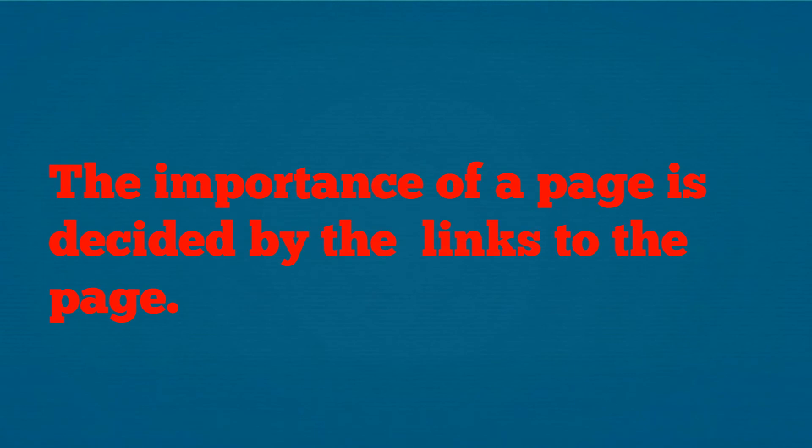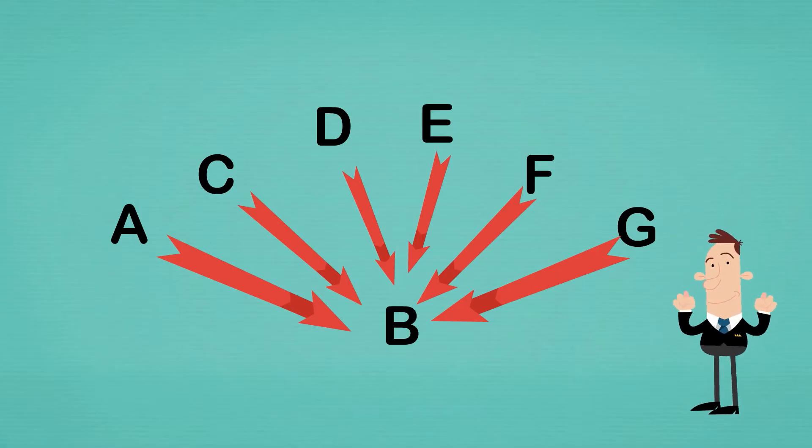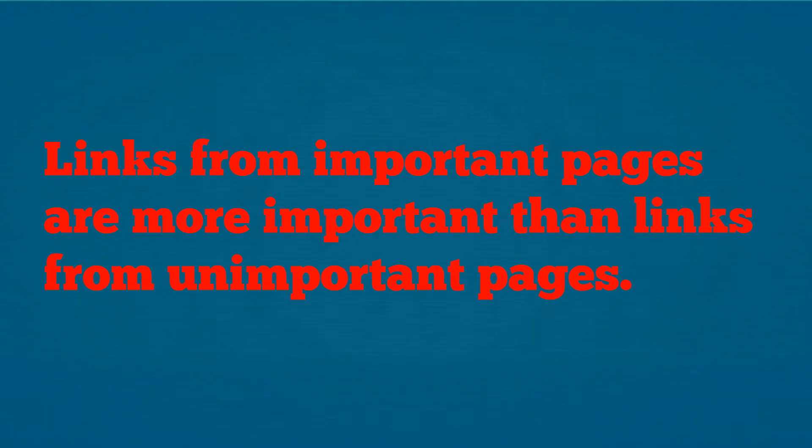The second principle is that the importance of a page would be decided by the links to that page. Now by links, I mean that if website A has a URL that you can click on that takes you to website B, then we say there is a link from A to B. The more pages that have links to your website, the more important is your website. And finally, links from important pages are more important than links from unimportant pages, and this seems reasonable. If CNN.com has a link to my website, that makes my website more important than if my brother's website had a link to mine.